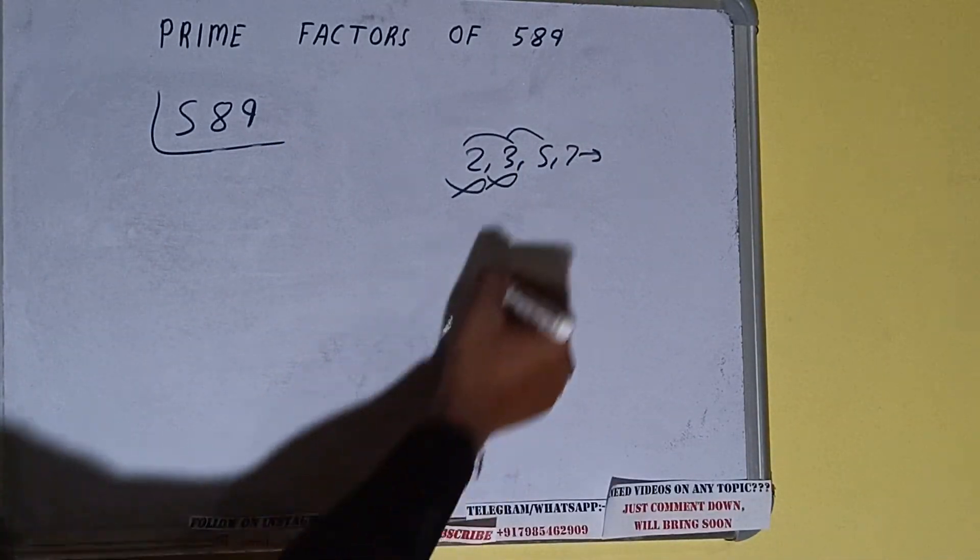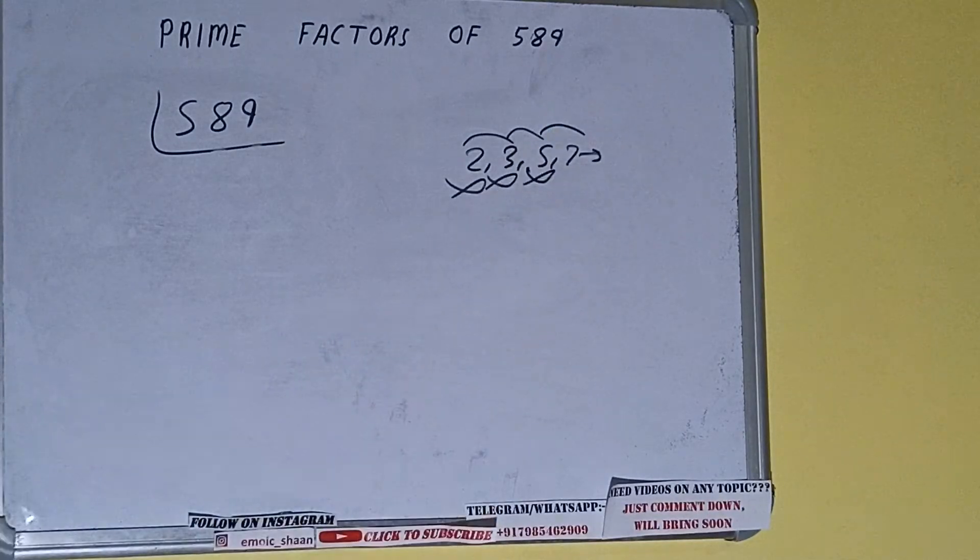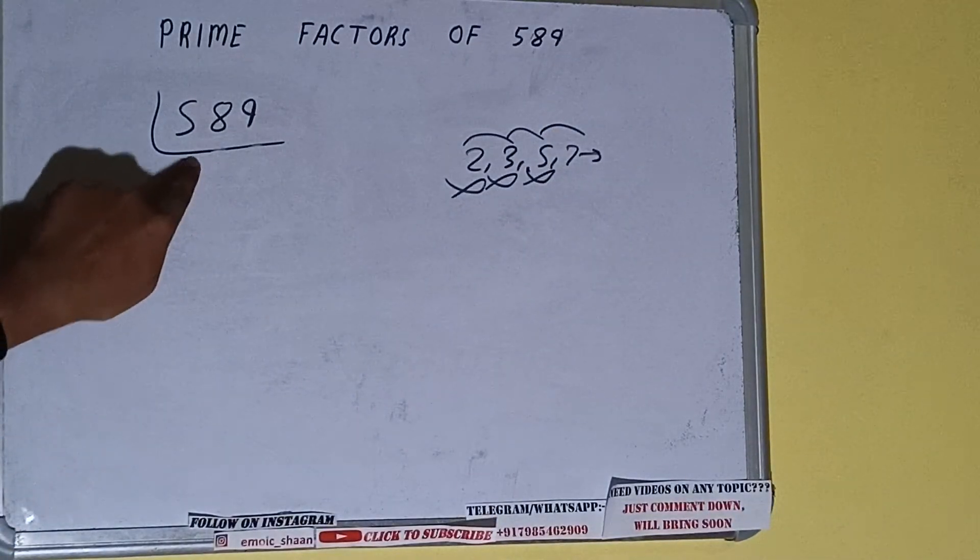Let's check with 7. 7 eights are 56, 2 9. With 7 also not divisible.